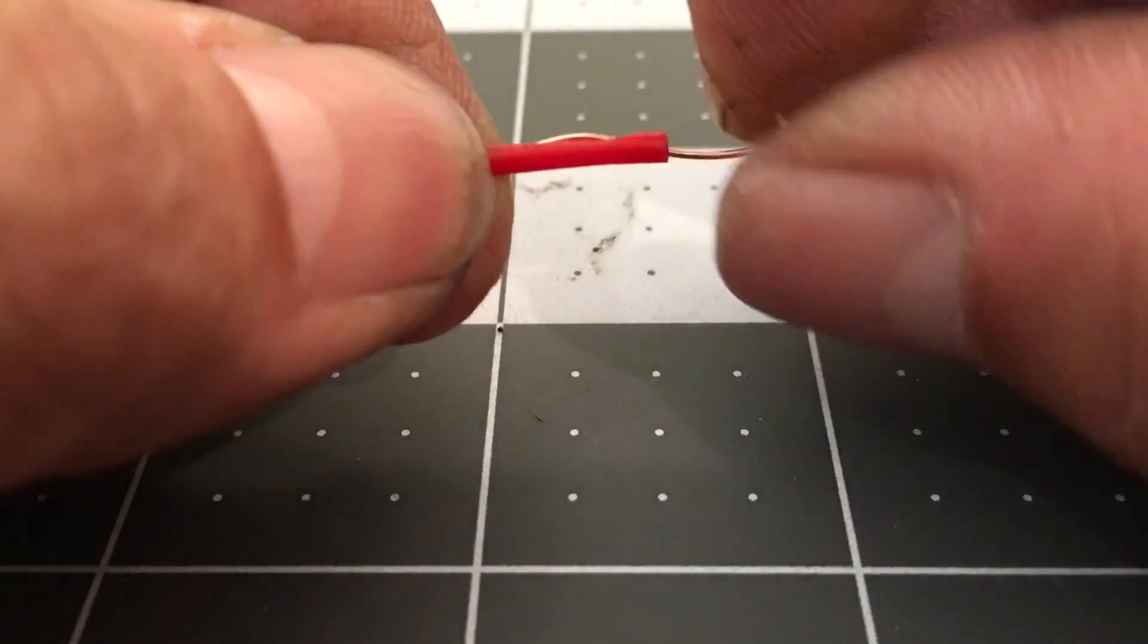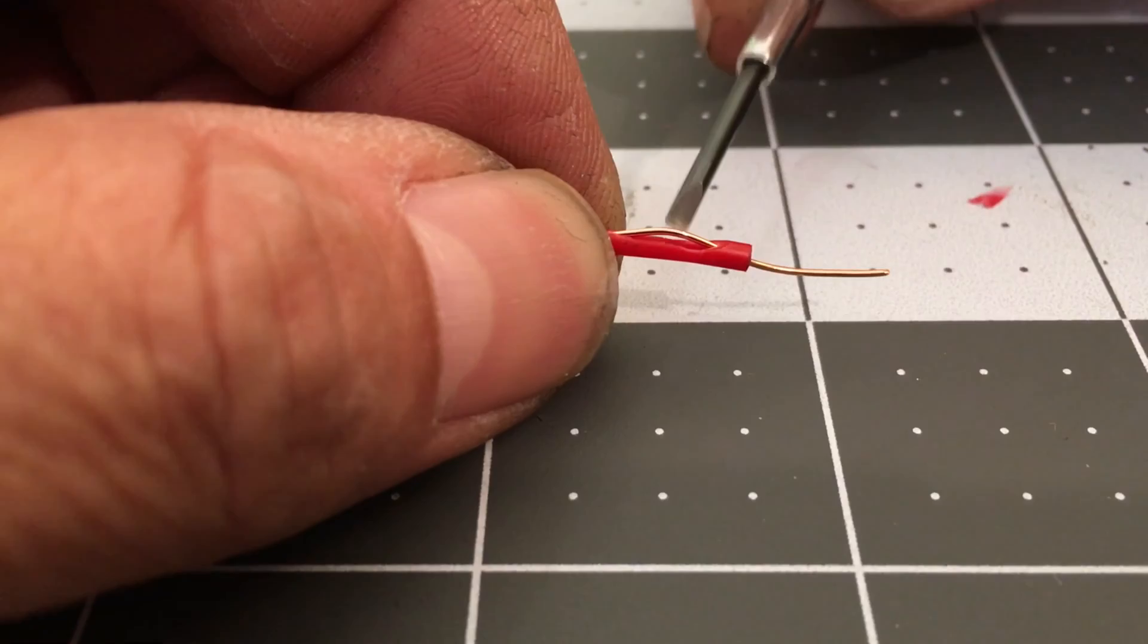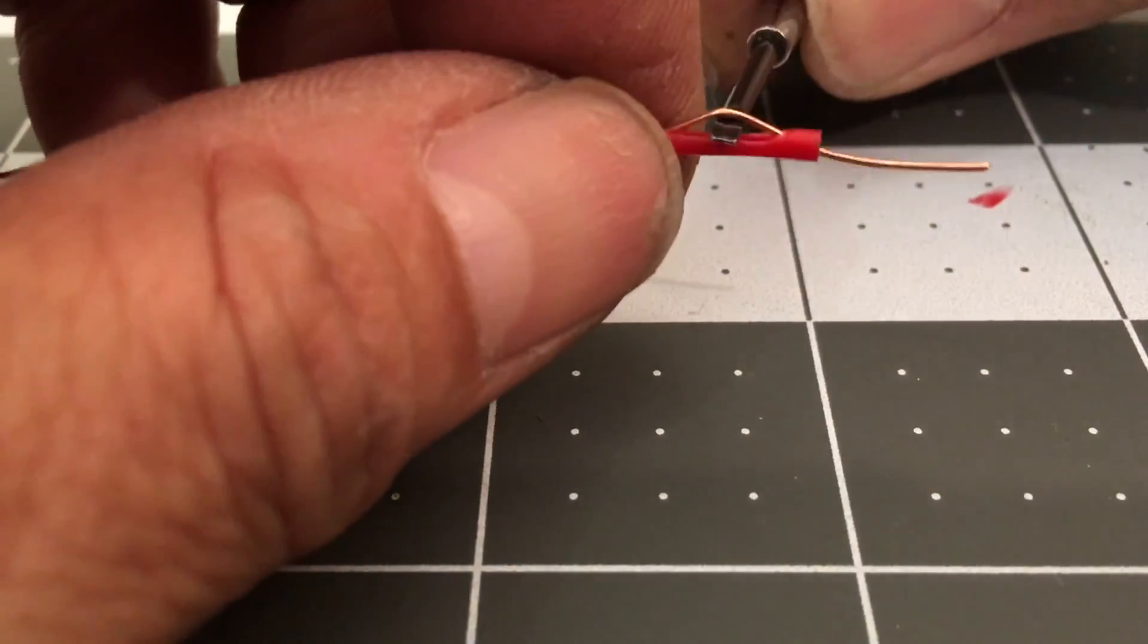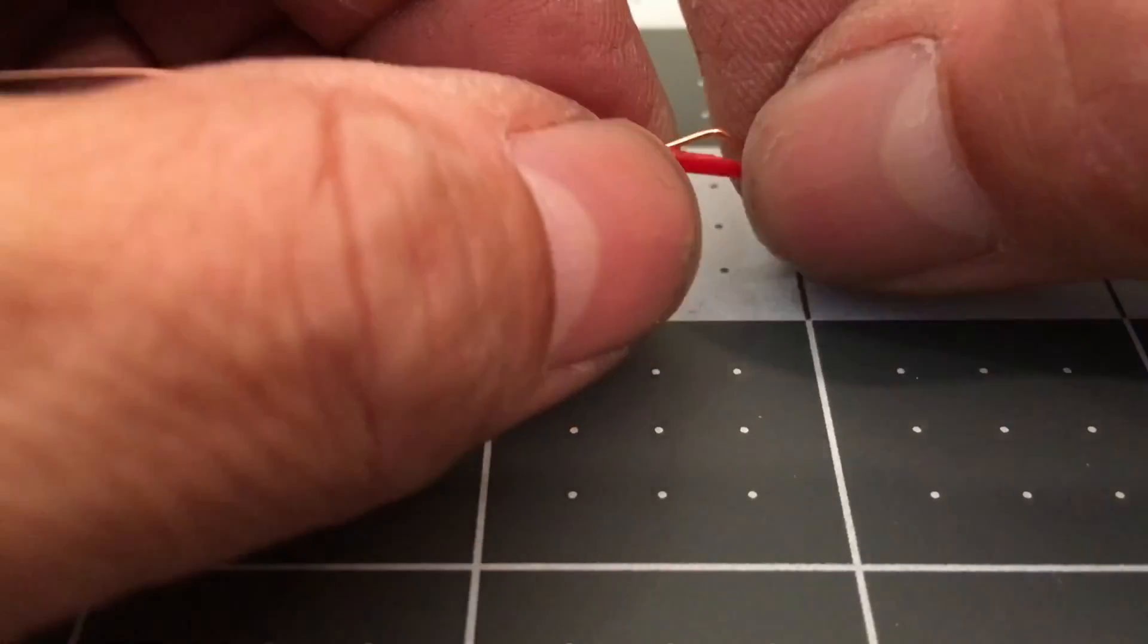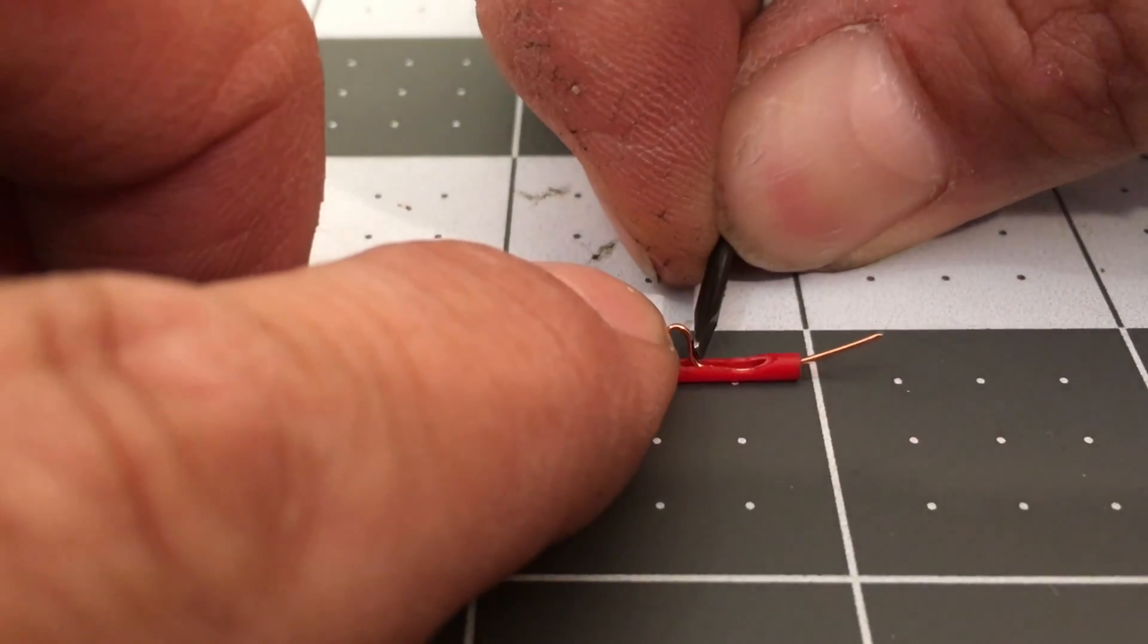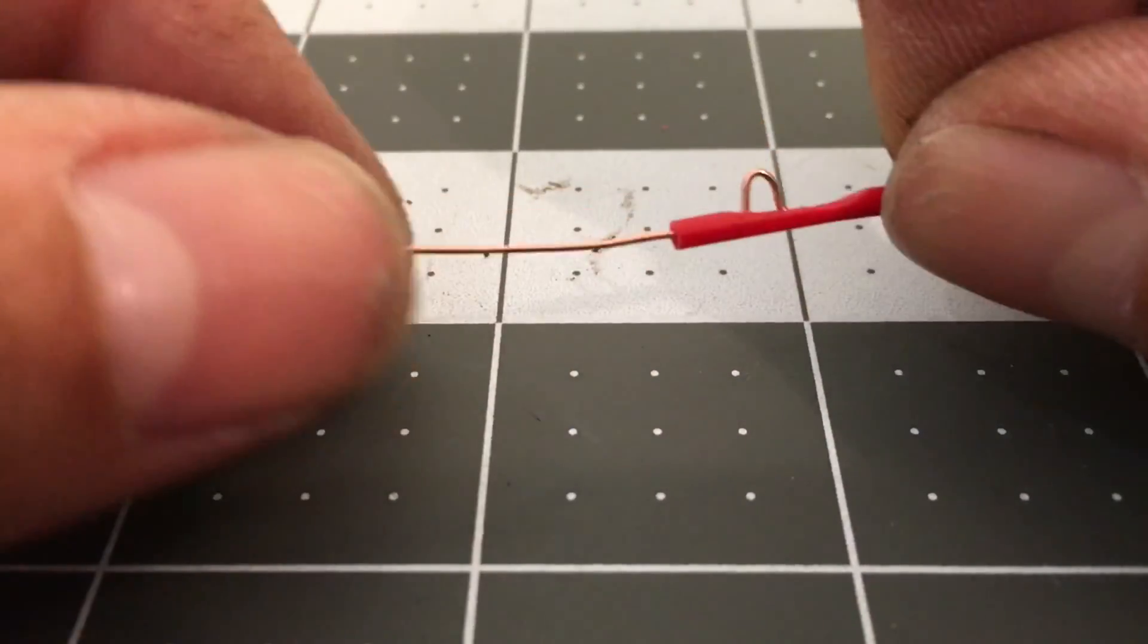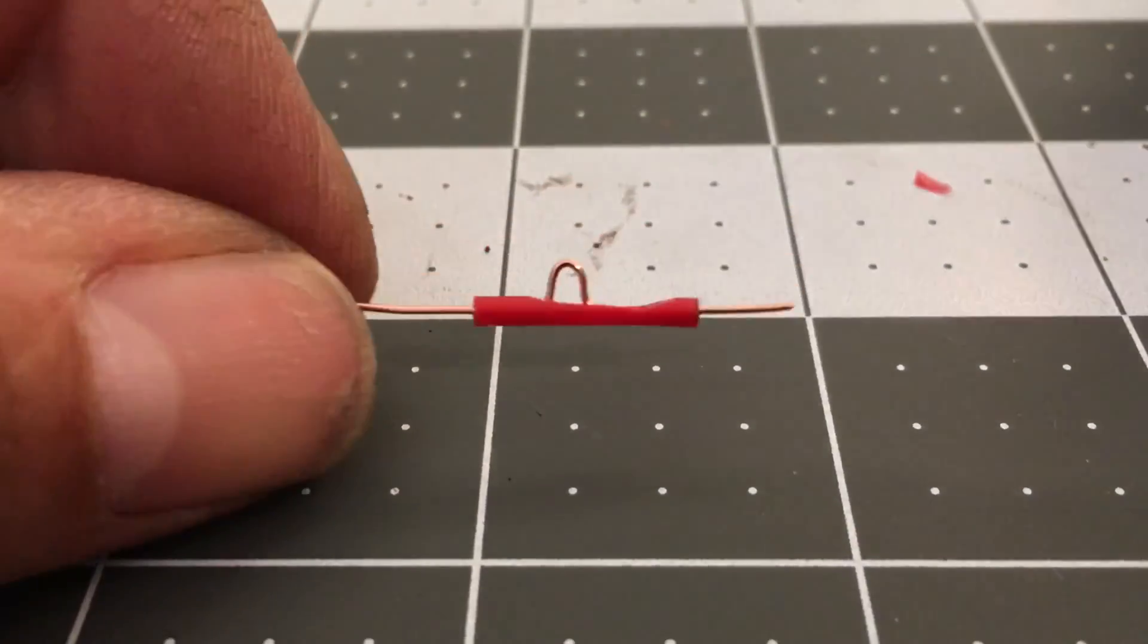I'm going to fold over the ends and then bend a section of it through. This piece that I bend up will act as the little lever to operate the switch back and forth. Once I've made this little lever, I go ahead and trim the copper to size.